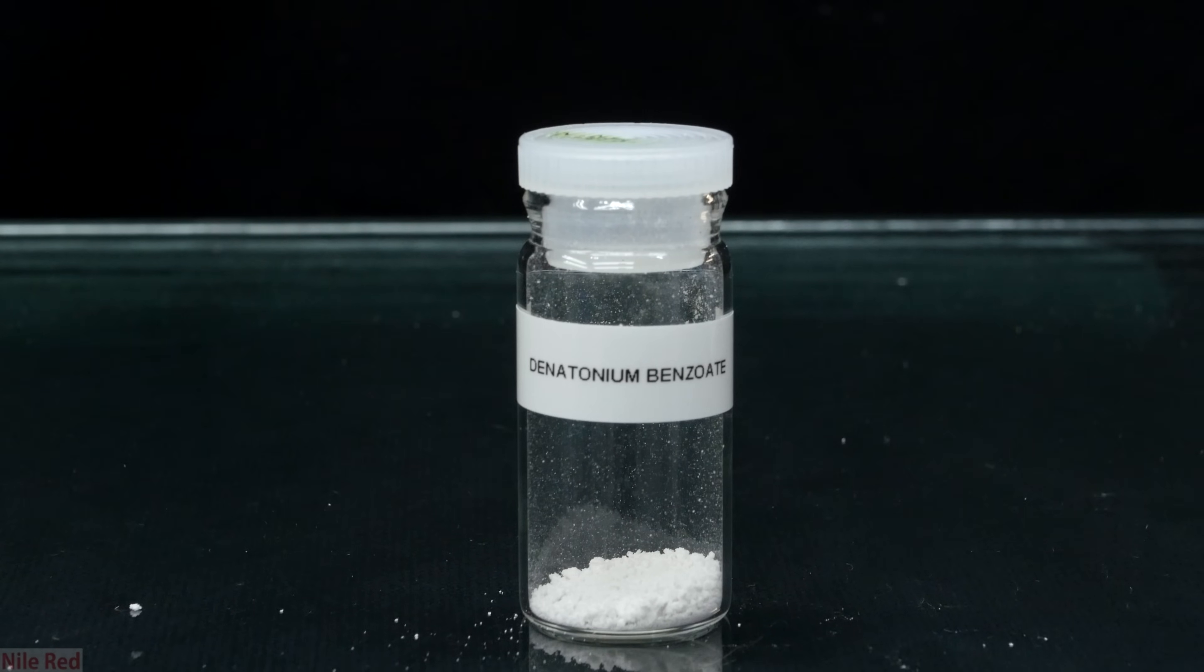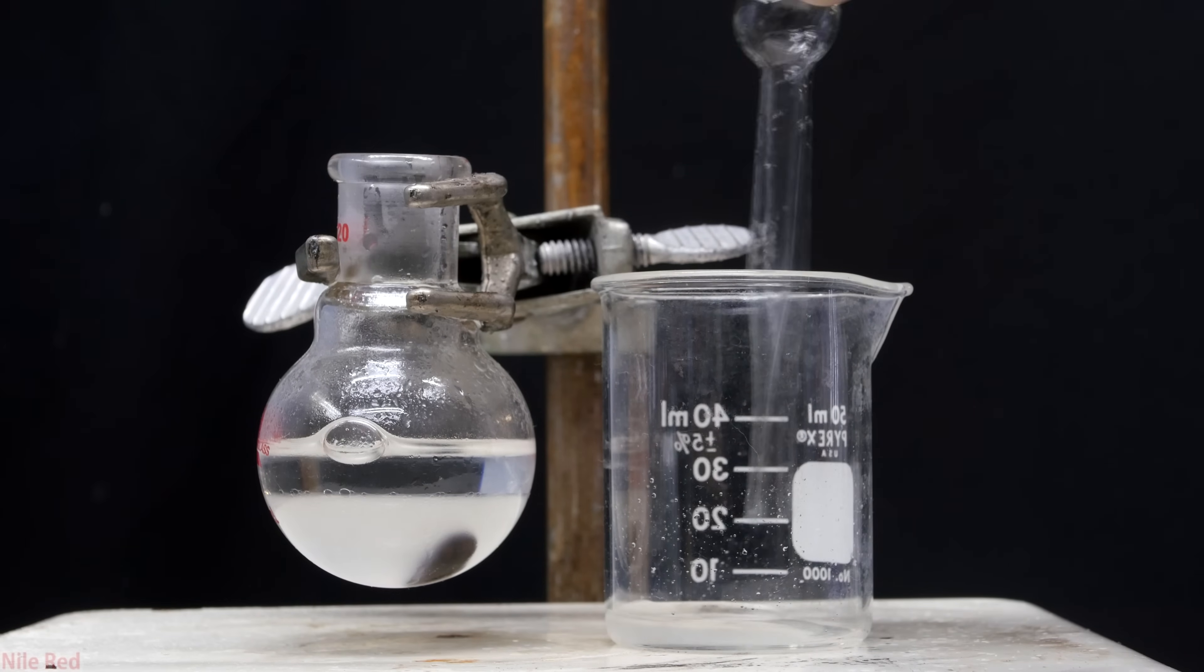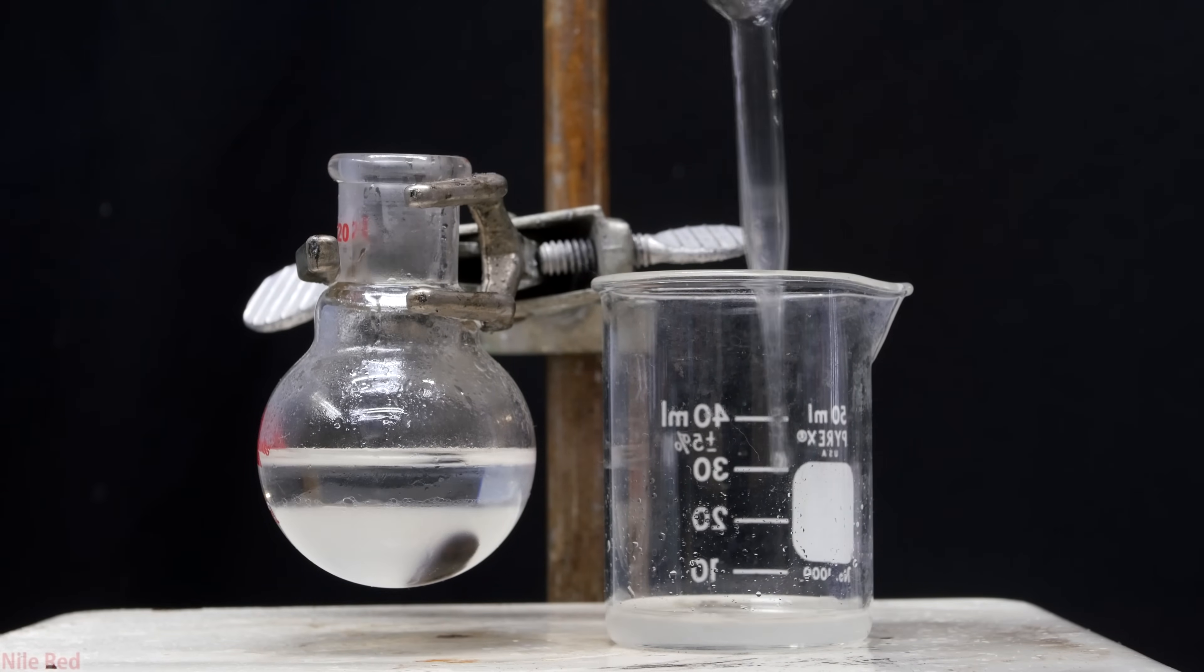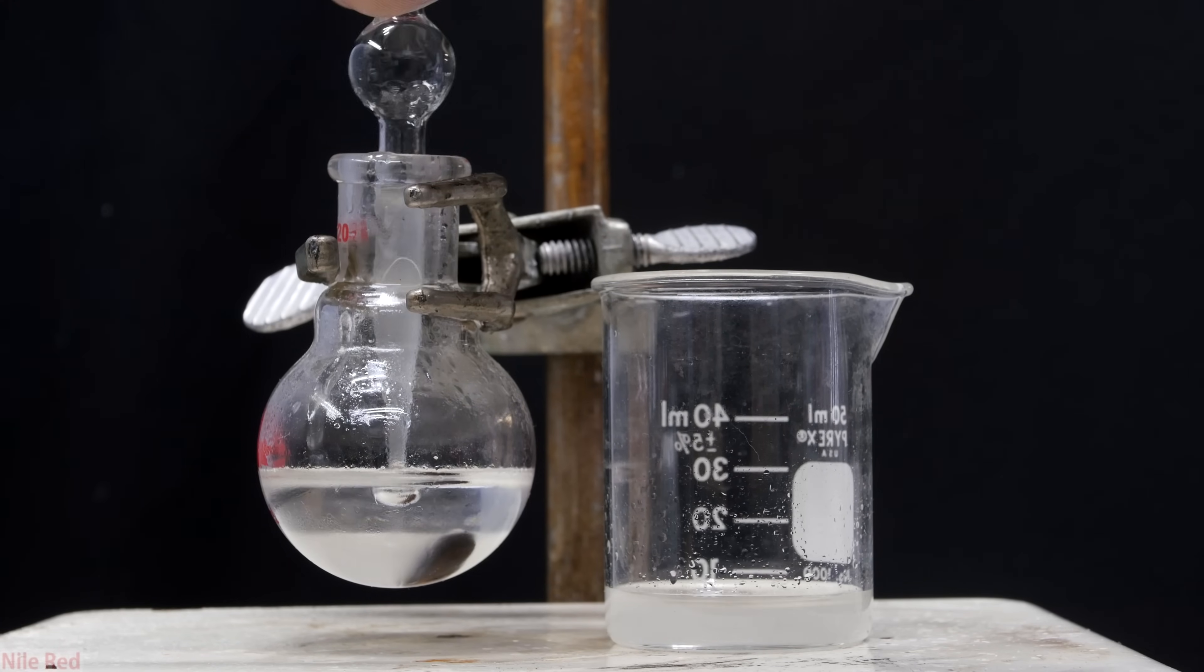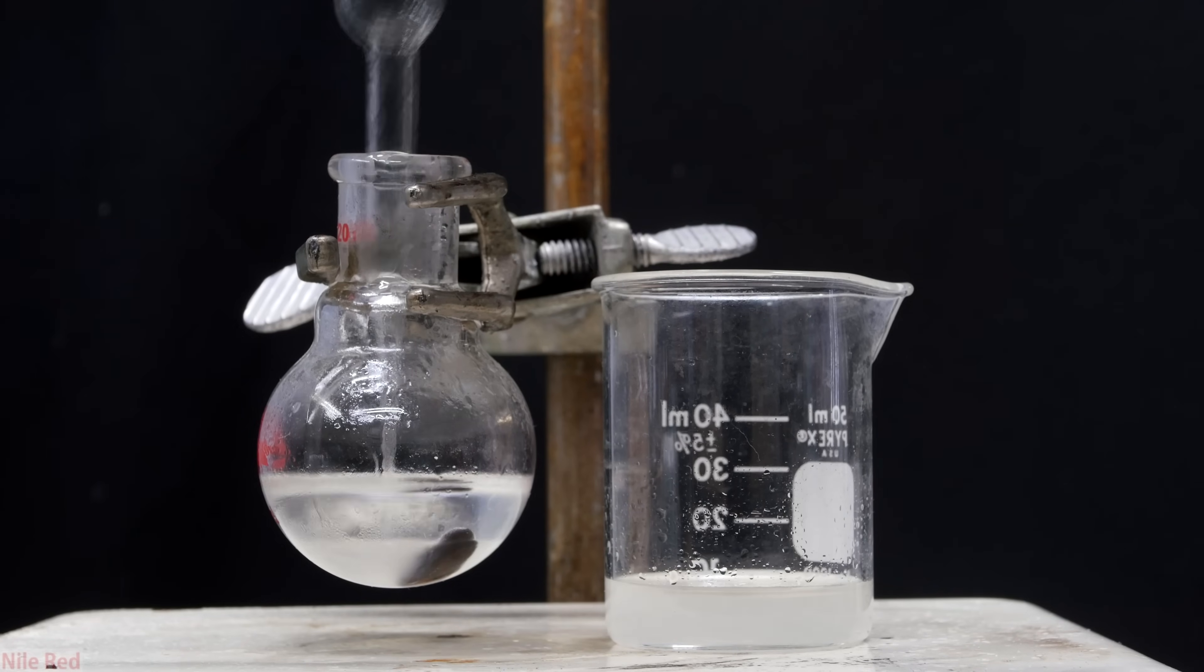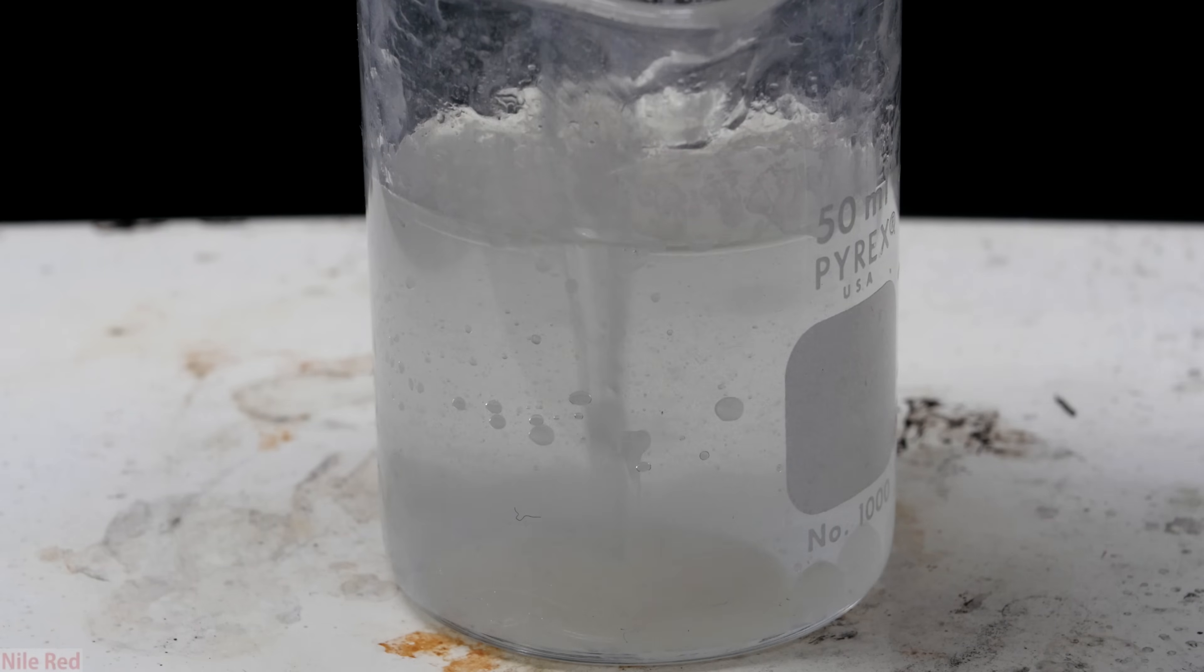Today we're going to be making a little bit of denatonium benzoate, which is a super bitter compound. One of the common brand names is Bittrex, and it's basically just used to make things bitter. It's commonly included in various chemicals and alcohols that you really shouldn't be drinking, like methanol or paint thinner. It also has some niche uses like in special nail polish to prevent nail biting.